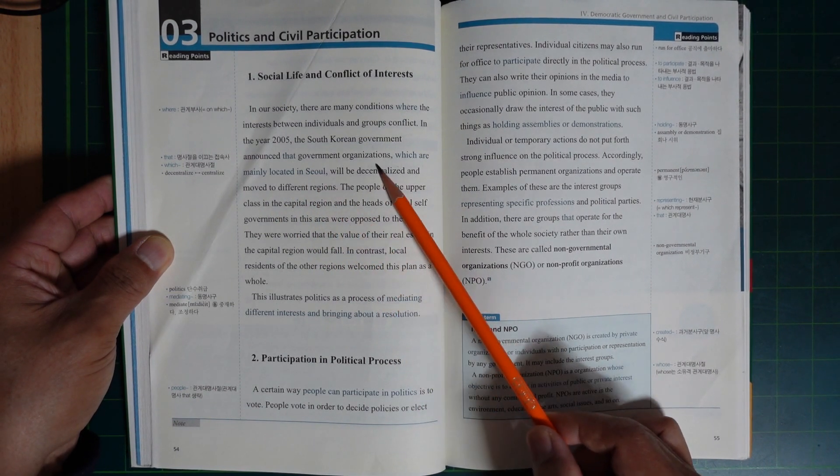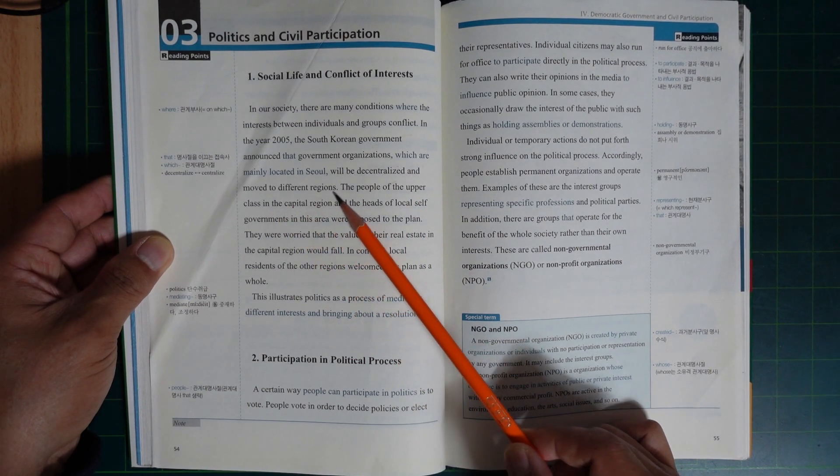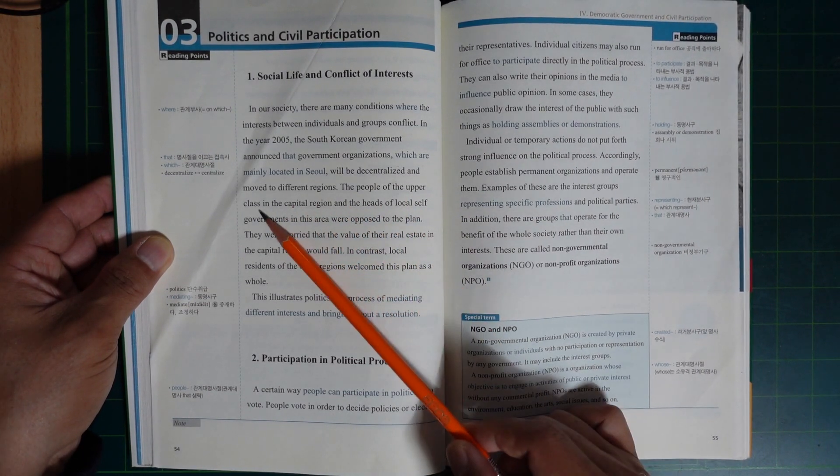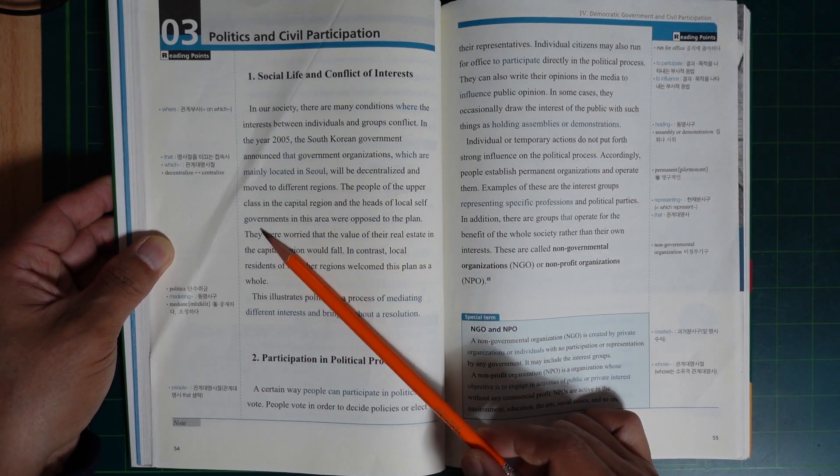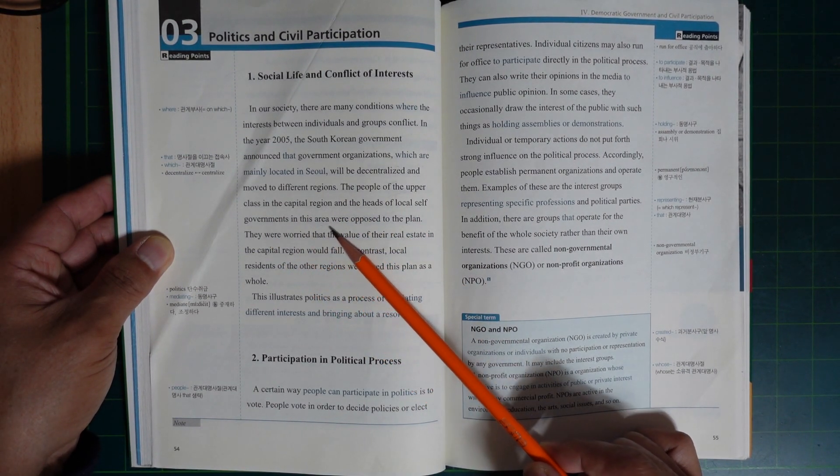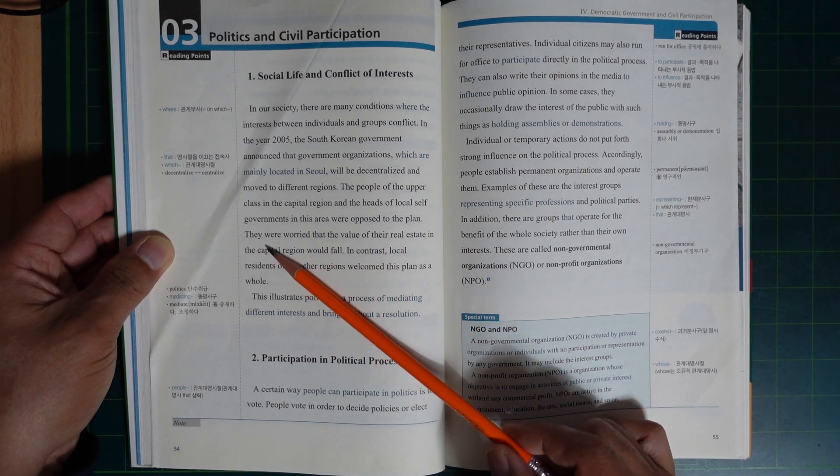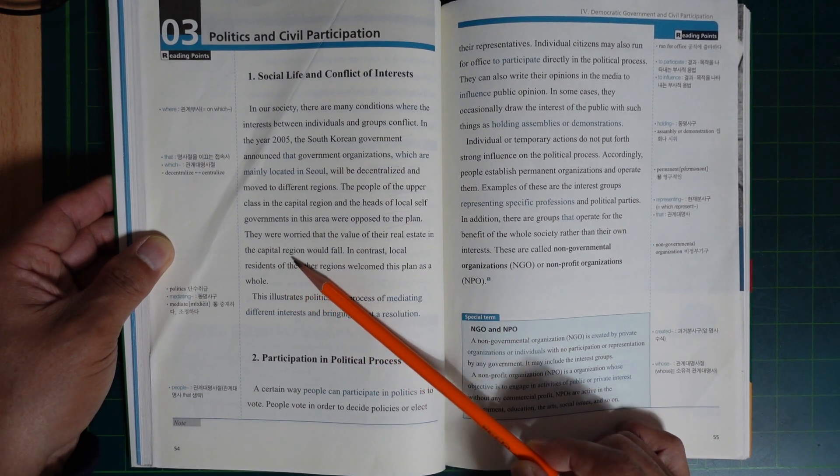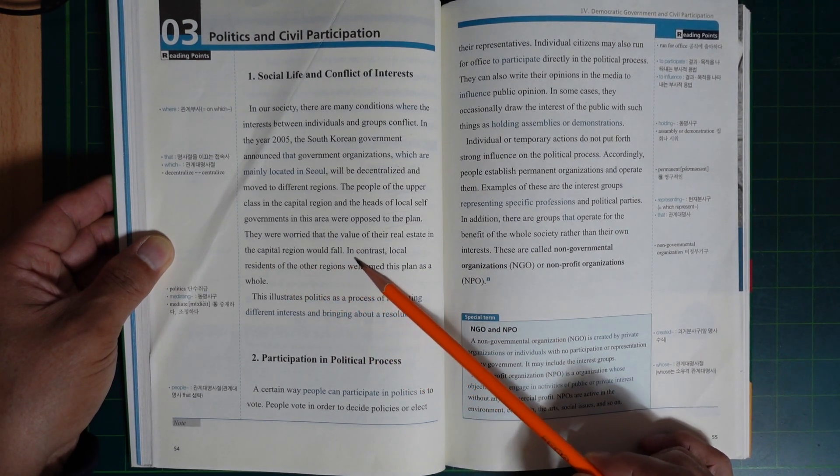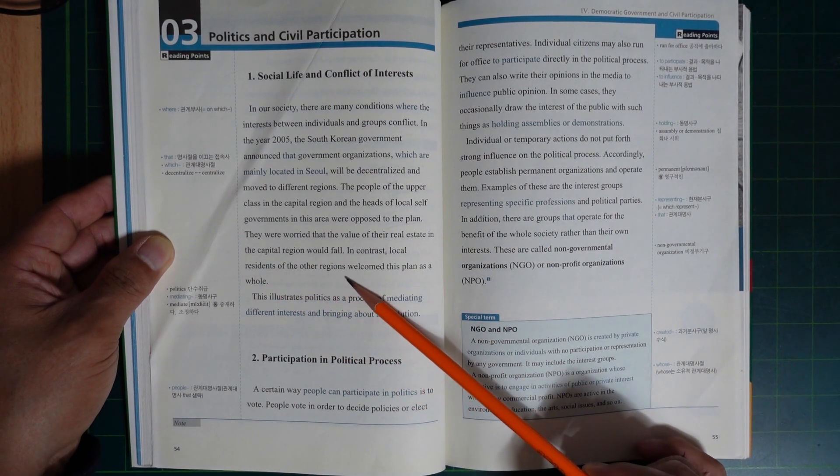...decentralized and moved to different regions. The people of the upper class in the capital region and the heads of local government in this area were opposed to the plan. They were worried that the value of their real estate in the capital region would fall.